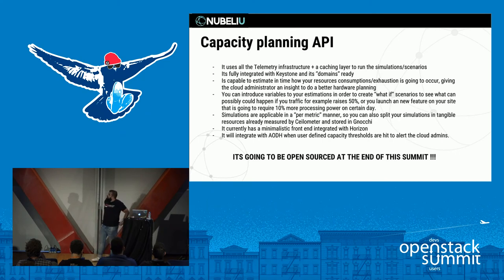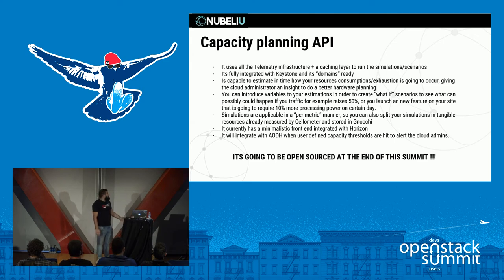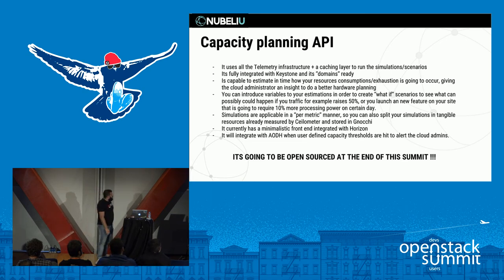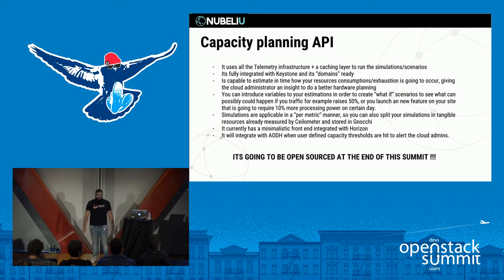The capacity planning API we developed uses all the telemetry infrastructure you already have in OpenStack — no black boxes or additional tools needed. It's fully integrated with Keystone V3, so you can configure domains and use it for reselling in a public cloud environment. It's capable of doing estimations based on all the metrics so you can know when your hardware is going to be tapped out and when you'll need to buy new hardware, enabling a better hardware planning strategy.